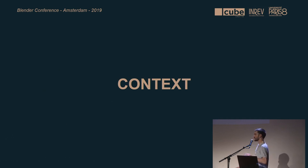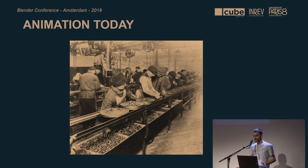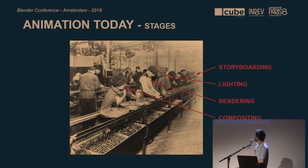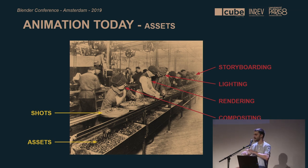Let's give some context first. Today's animation pipeline has been industrialized — it relies on a linear assembly line. A linear assembly line is a manufacturing process in which parts are added as the semi-finished product moves from workstation to workstation. In animation, workstations mean production stages such as storyboarding, lighting, rendering, and compositing. Parts could either be assets or shots — all linearly created through those stages to bring the movie to life.